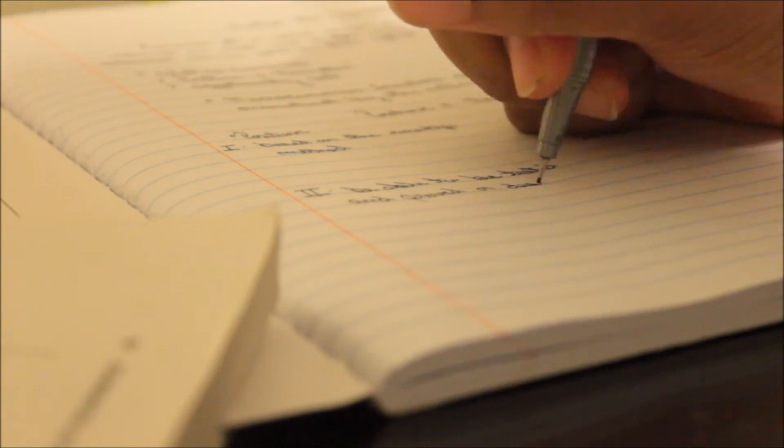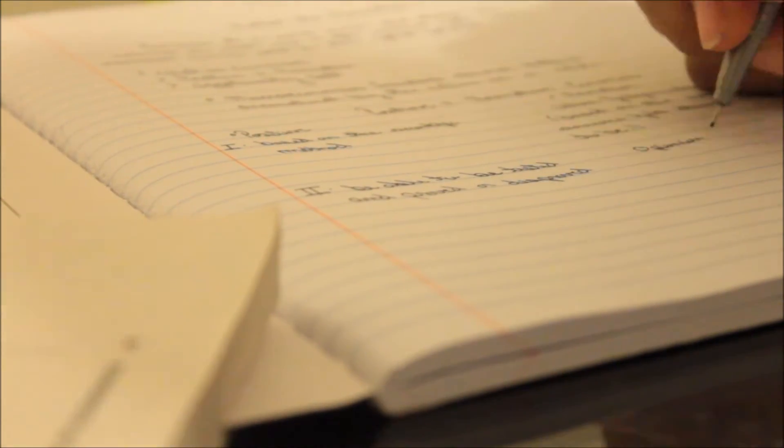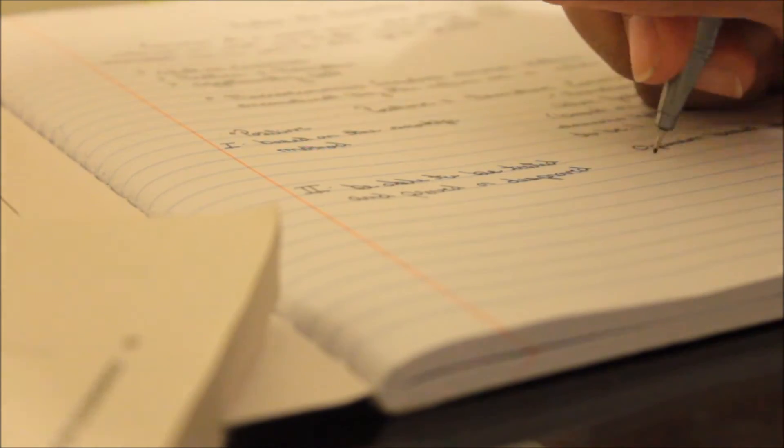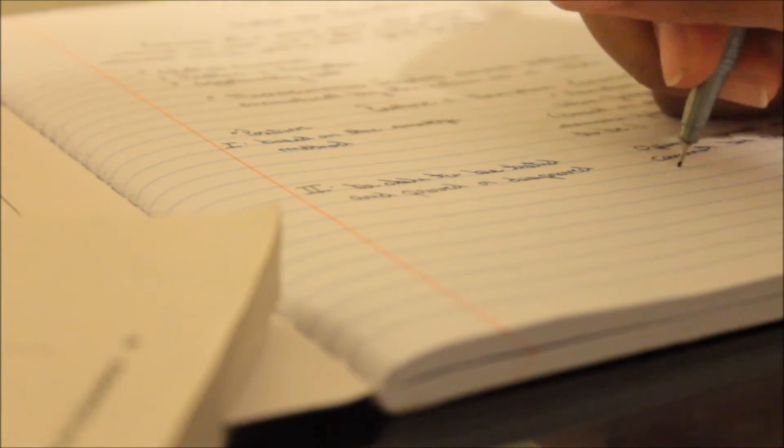So here you're seeing positive versus normative economics, and I have bullet points written in Roman numerals to show the difference between each.